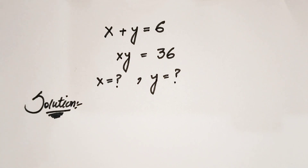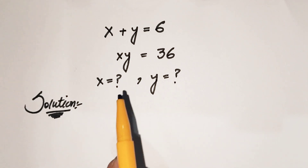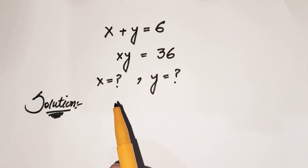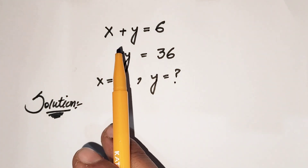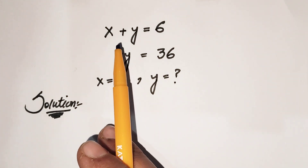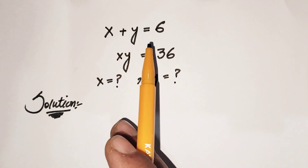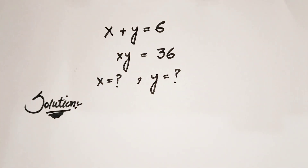Hello everyone, welcome back to Minimass Club. Today we have two equations. The first one is x plus y is equal to 6, and the second one is x times y — the product of x and y — is equal to 36. So the sum of x and y is 6 and the product of x and y is 36. We need to find the values of x and y.